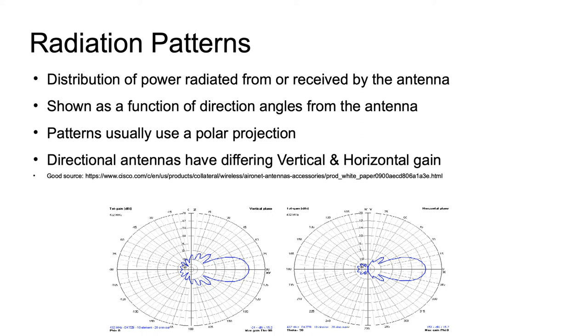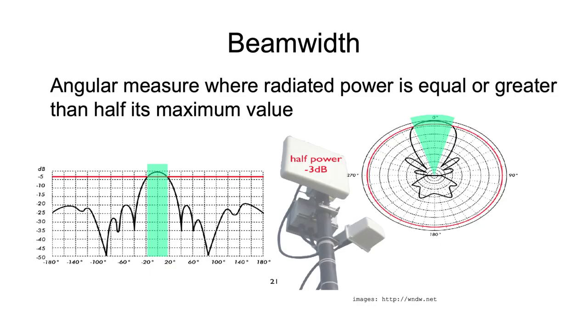The beam width I mentioned earlier - how do we actually measure this, how do we define this? We say it's that direction where the power has fallen from zero dB - that's the strongest, that's the direction it goes into - to minus three dB, half the power. So that's how we define beam width. It's the direction where, at the edge of the beam, we still have half the power compared to the absolute maximum.